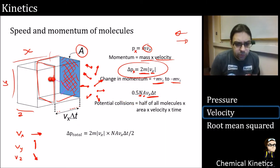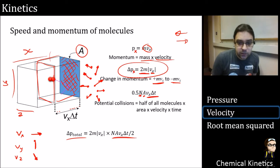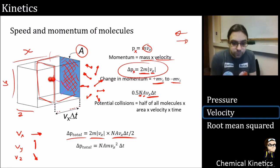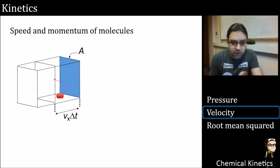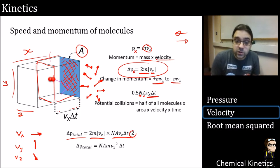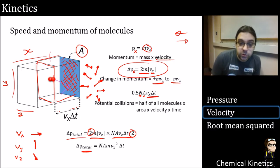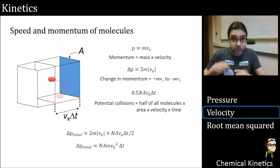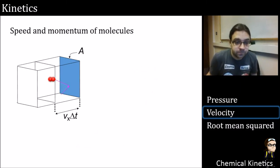When we multiply those together, we want to get the total change in momentum. We take how many molecules there are and multiply by the individual molecule's momentum change. Rearranging, we notice that the two factors of one-half and two cancel out, giving us: total change in momentum equals the number of molecules (as a concentration) multiplied by area, by mass, by velocity squared, and by delta-t.